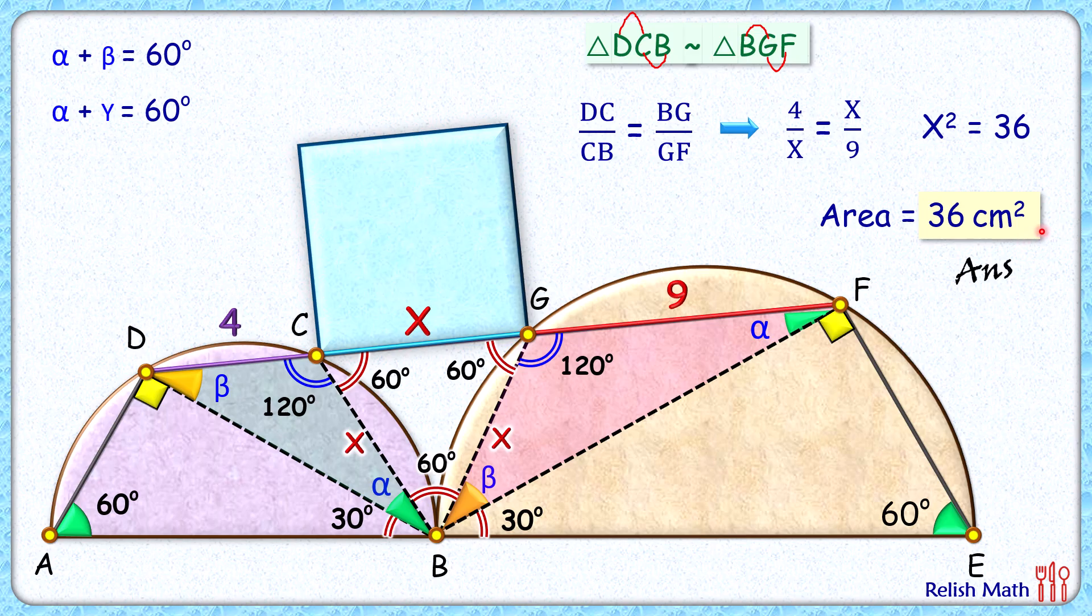And thus, area of the square is 36 centimeters squared, and that's our answer. I hope you enjoyed the solution. I will see you in the next video. Till then, tata, bye bye.